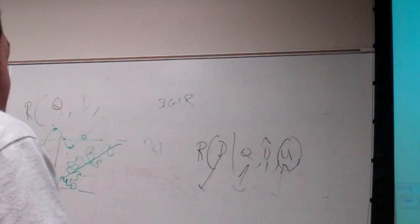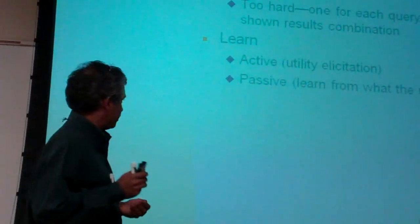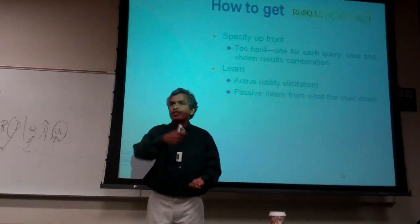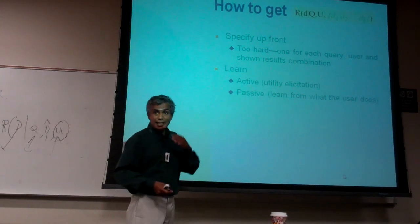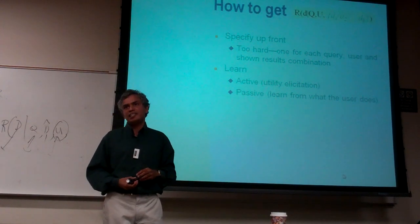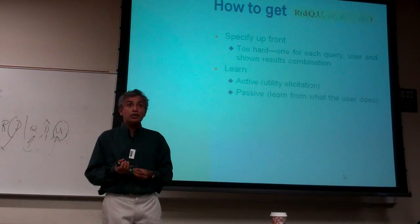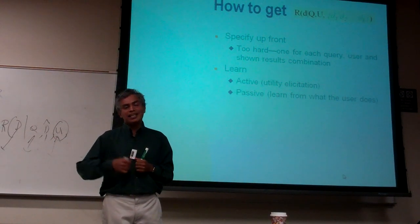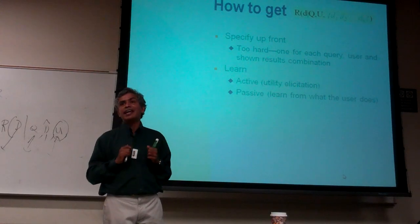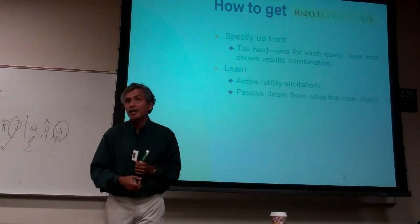Learning is one way of figuring out relevance. The relevance function really should be a learning problem. You can do it actively — elicit by asking, do you like this? And then slowly learn the function that the user has. Passively, if you're Google or some search engine, you know how many times people clicked on a result and came back right away. Every time they did, you can assume they didn't like it. And if they clicked and didn't come back, you can assume they indirectly liked that page. So you think that's relevance, and you now have training data to learn the function.